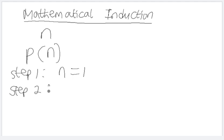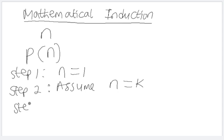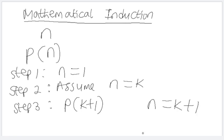Step two is a conditional statement: we assume that the given statement P of n is also true for n equals to k, where k is a positive integer. Then step three, we prove that the result is also true for P of k plus one — we are now treating n as k plus one. Once these three conditions are satisfied, we can say the statement is true for all natural numbers n.